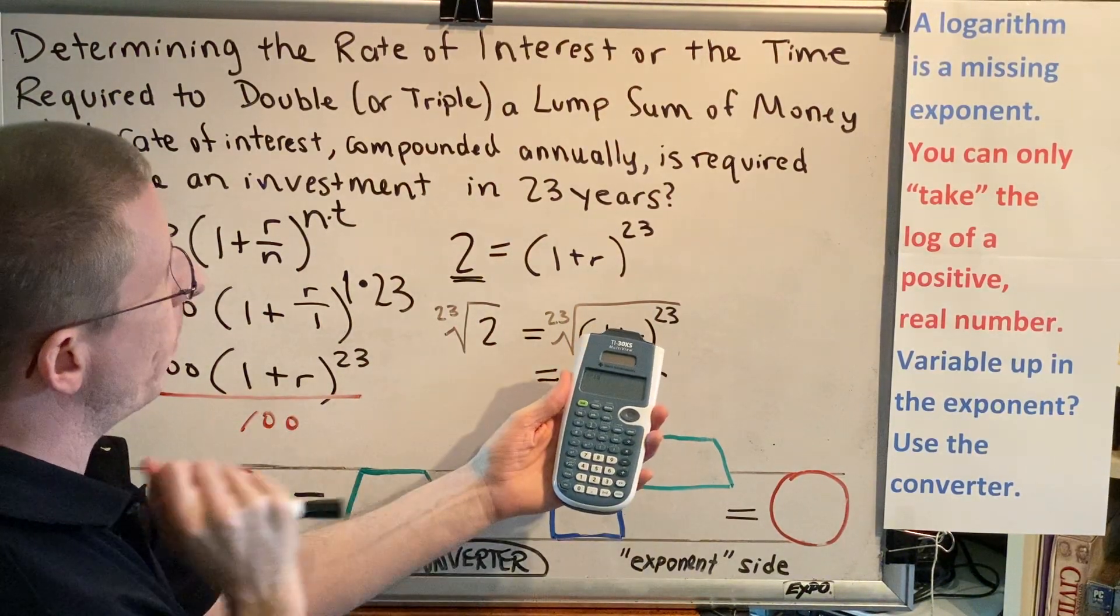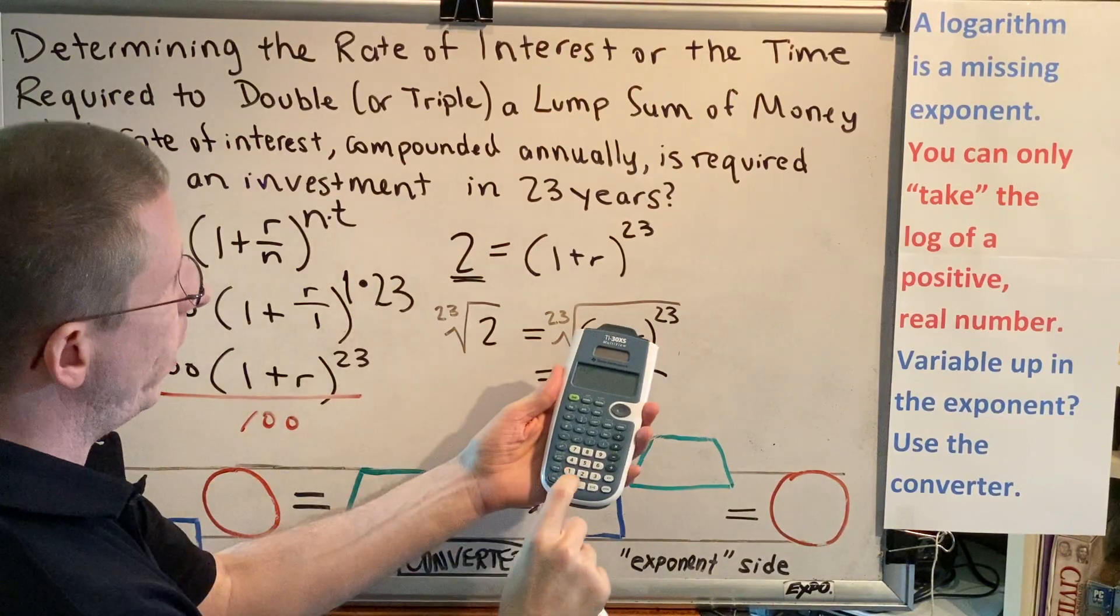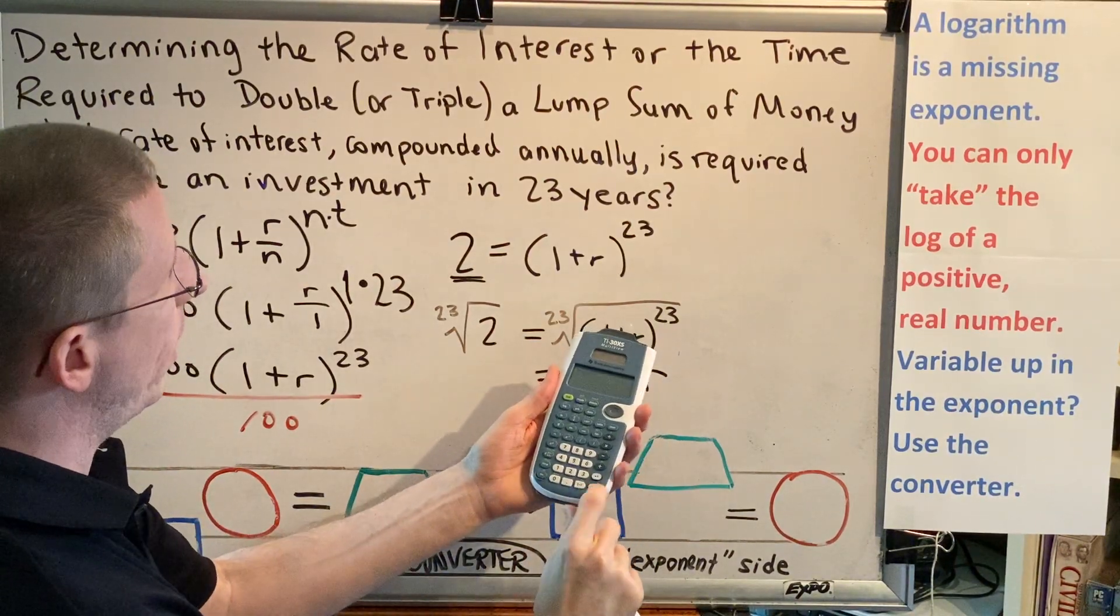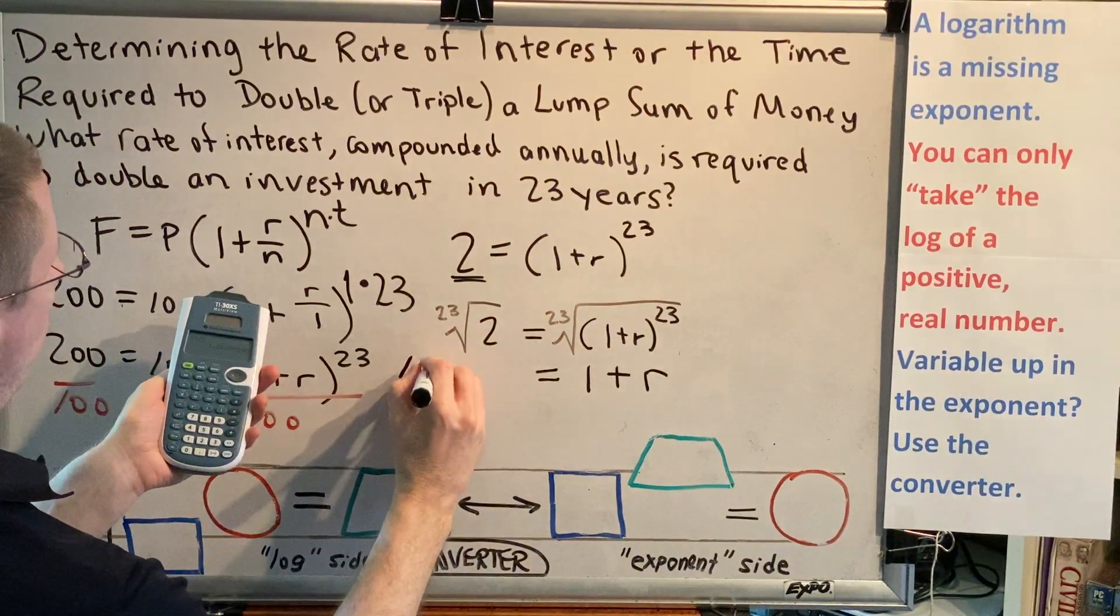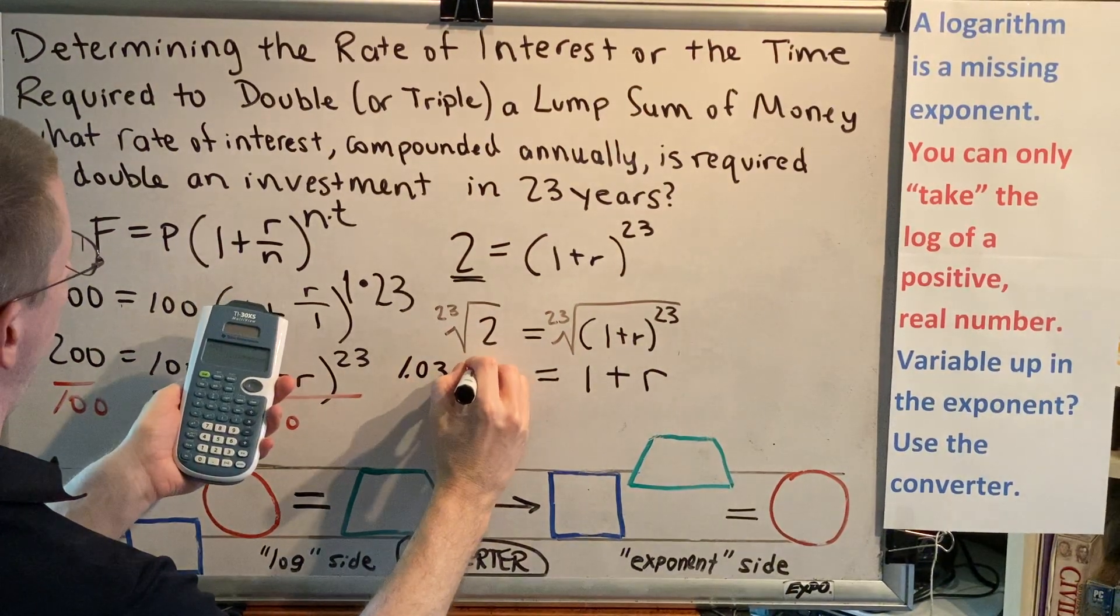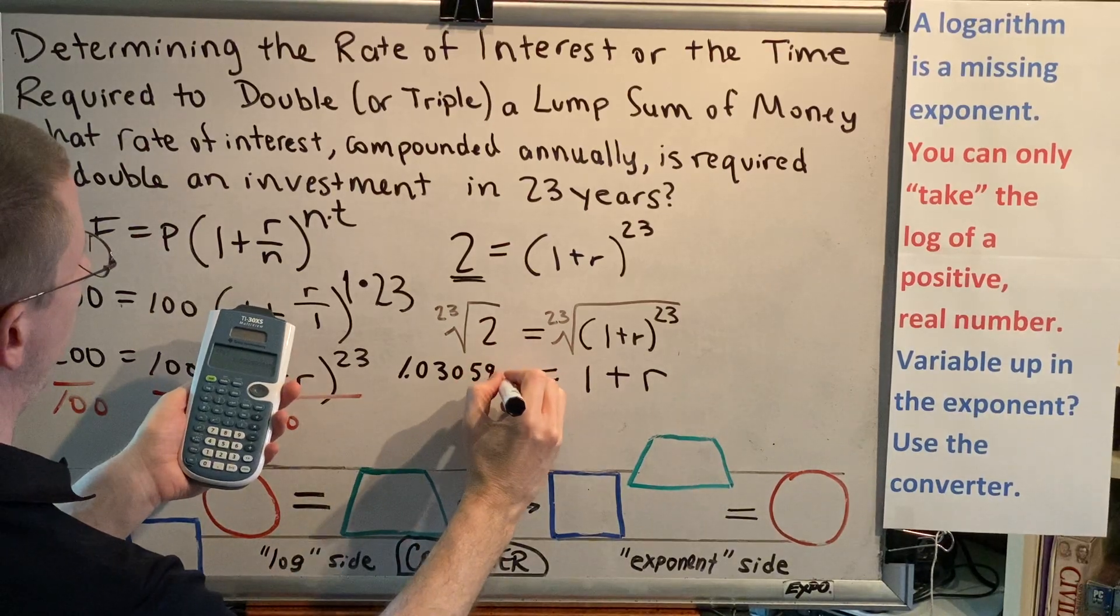And now we can put in our 2. And when we hit enter, we're going to get a decimal value: 1.03059, et cetera.